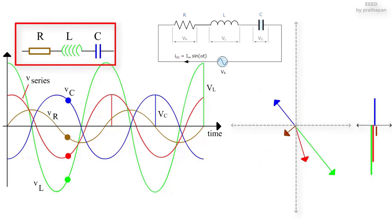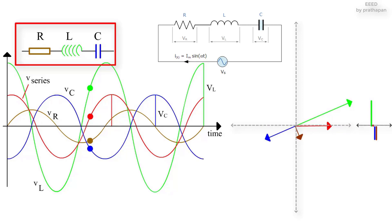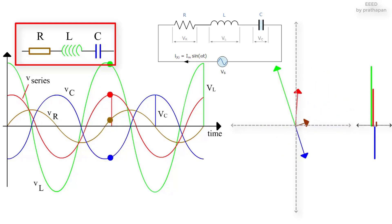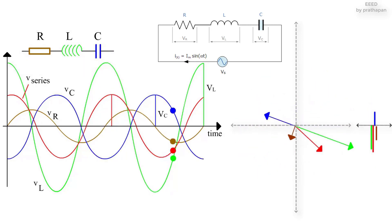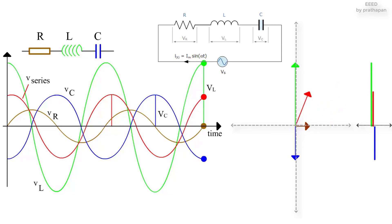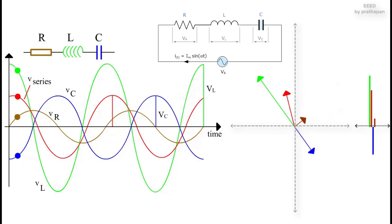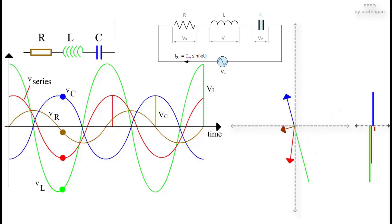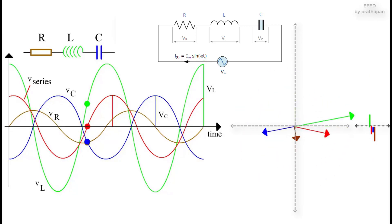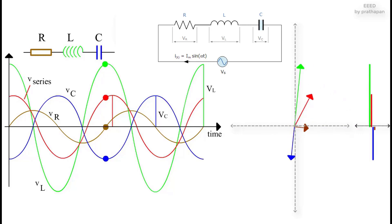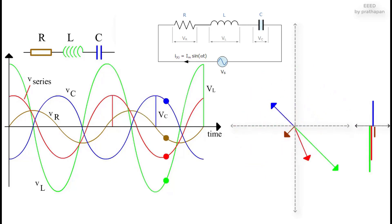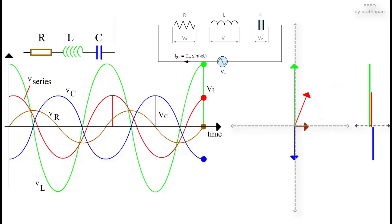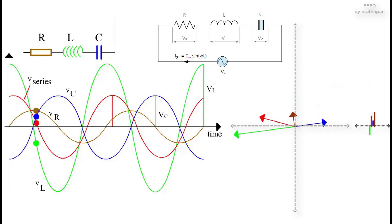Series RLC circuits consist of a resistance, a capacitance and an inductance connected in series across an alternating supply. Thus far we have seen that the three basic passive components of resistance, inductance and capacitance have very different phase relationships to each other when connected to a sinusoidal alternating supply.